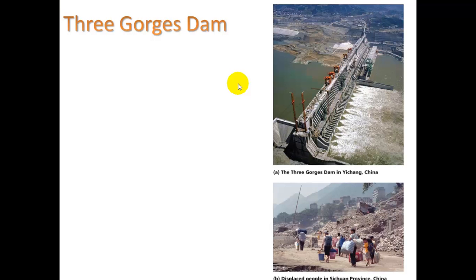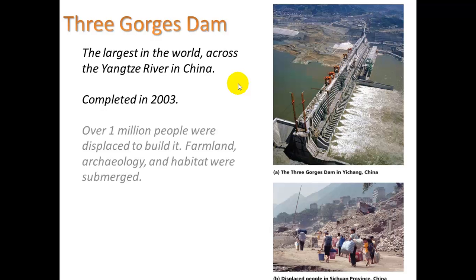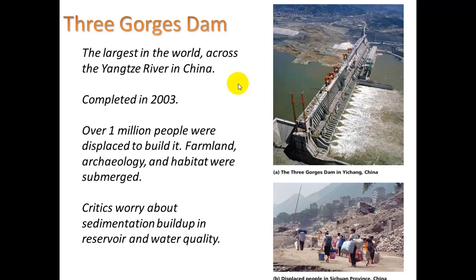Three Gorges Dam is the largest dam in the world, across the Yangtze River in China, completed in 2003. Over 1 million people were displaced to build it, and farmland, archaeological sites, and habitat were all submerged. Critics worry about sedimentation buildup in the reservoir and water quality — there are places where the sediment is so thick you can actually walk on top of it, almost like thick clay.